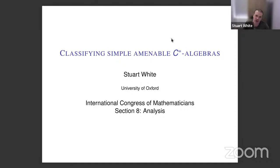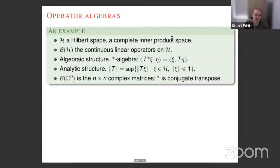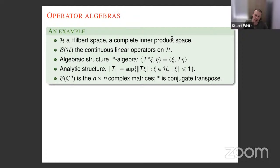So, classifying operator algebras — what are operator algebras? The canonical example is the bounded operators on an infinite-dimensional Hilbert space, B(H). You have to insist on bounded operators because it doesn't come for free when the space is infinite-dimensional. This has both algebraic structure — the structure of a star algebra, where multiplication is given by composition of operators — and analytic structure given by the operator norm.